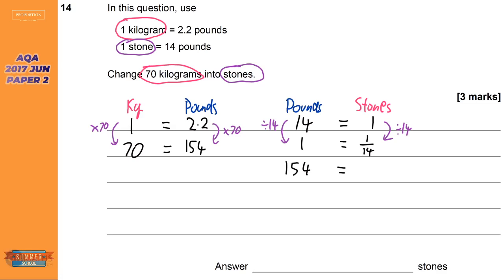And then to get from 1 to 154, we times it by 154. So it's sometimes easier to go to 1 first, and then make your way to the answer.